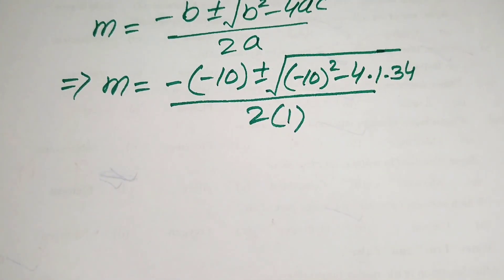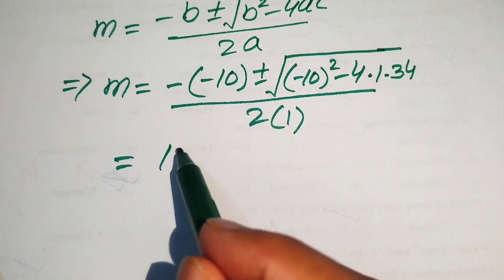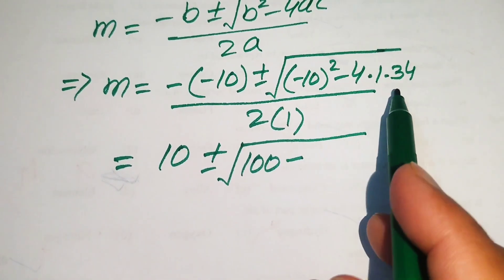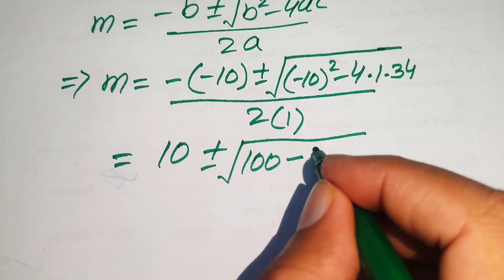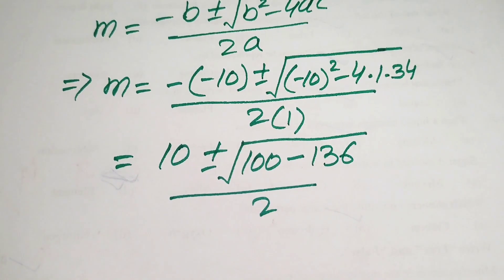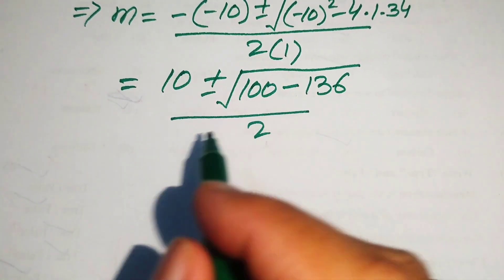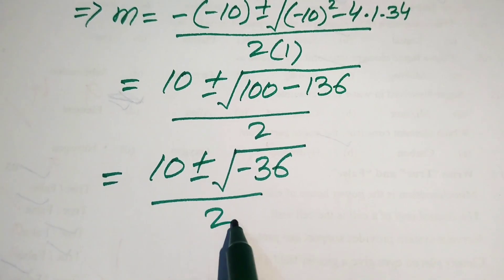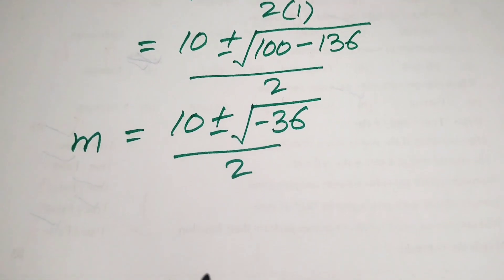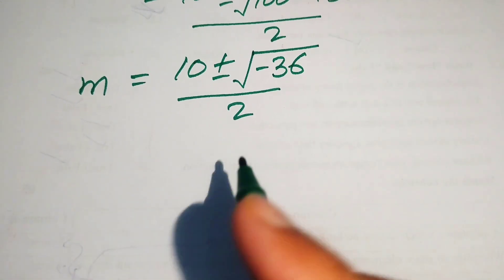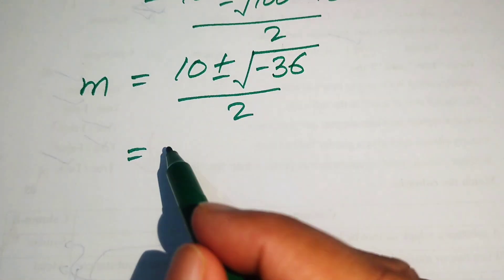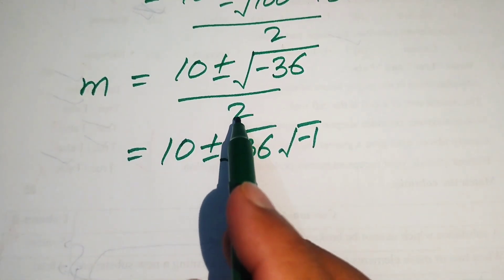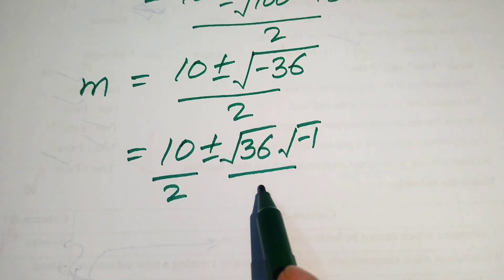Simplifying, 100 minus 136 equals minus 36, so we have m equals (10 ± √(minus 36)) divided by 2. We break this as √36 times √(minus 1), giving (10 ± 6i) divided by 2, which simplifies by dividing each term by 2.